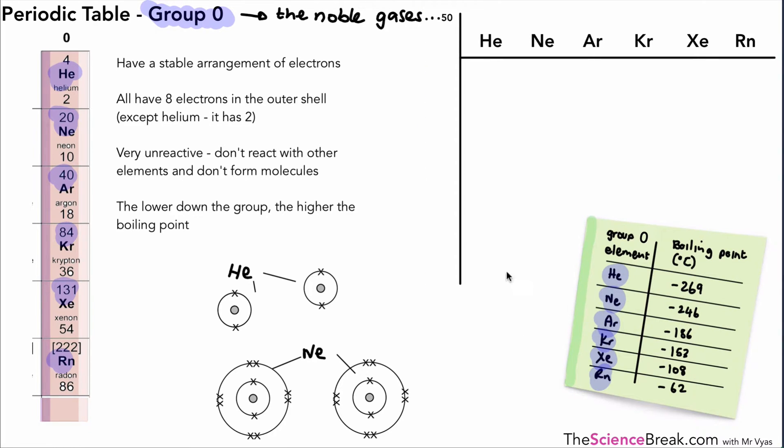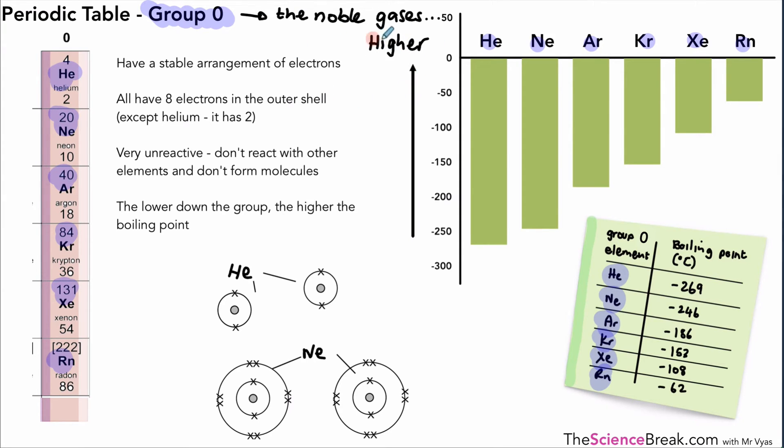How would that look on a graph? Here we've got helium all the way down to radon, as in our periodic table, and the graph would look like this. So you can see that helium with the lowest boiling point, and the further down the group you go, the higher the boiling point. So moving towards zero in minus numbers actually is an increasing boiling point - so we're going higher on the graph in that direction.